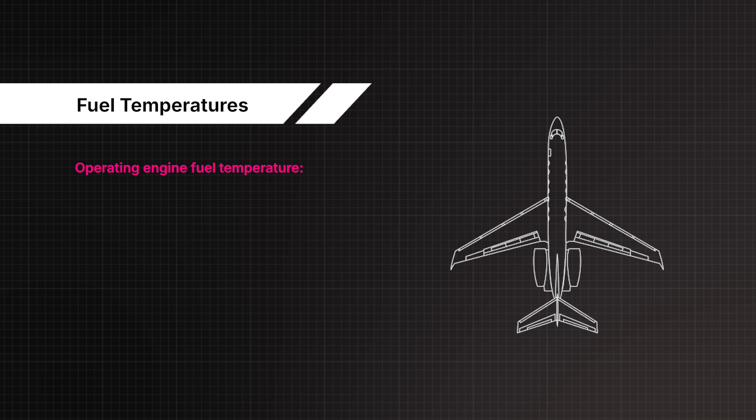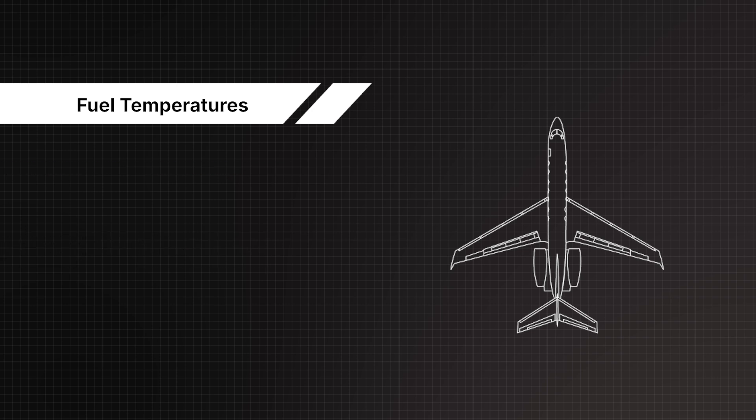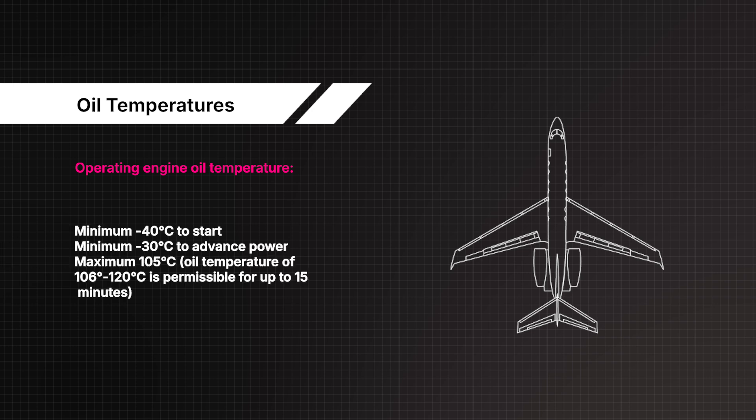Operating engine fuel temperature: minimum minus 40 degrees Celsius; maximum 90 degrees Celsius. Fuel temperature of 91 to 120 degrees Celsius is permissible for up to 15 minutes. Operating engine oil temperature: minimum minus 40 degrees Celsius to start; minimum minus 30 degrees Celsius to advance power; maximum 105 degrees Celsius. Oil temperature of 106 to 120 degrees Celsius is permissible for up to 15 minutes.